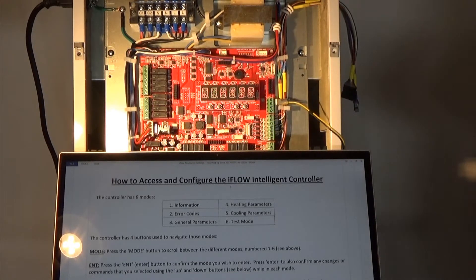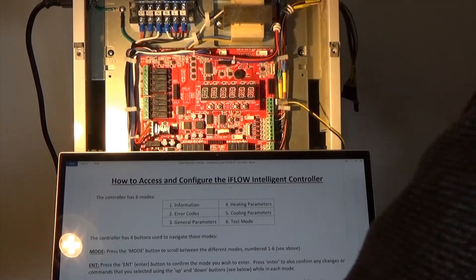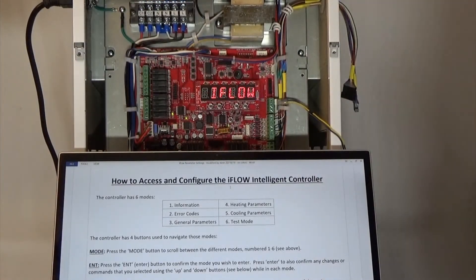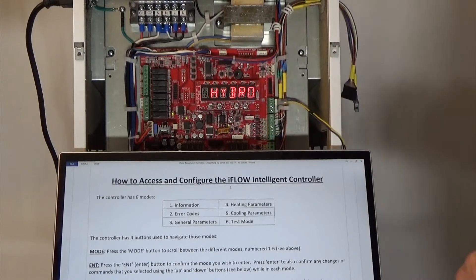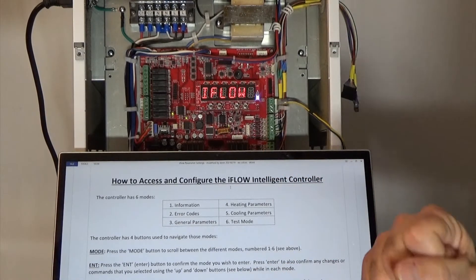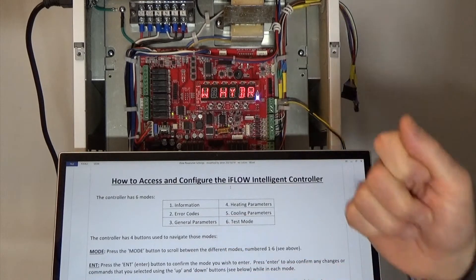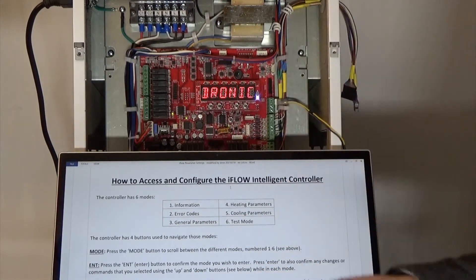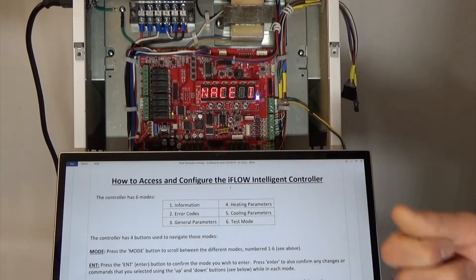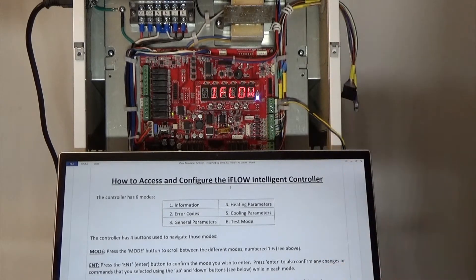That's how we will access the onboard controller. Depending on the model that you have, you can have between four and six modes. On all of our base models we have four modes: mode one is info, mode two is error, mode three is settings, and mode four is test.